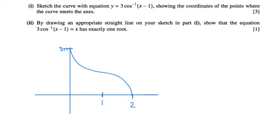Part 2 says by drawing an appropriate straight line on our sketch from part 1, show that the equation 3 inverse cos of x minus 1 equals x has exactly one root.